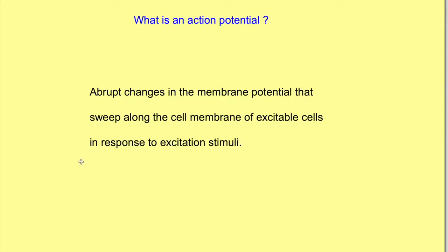Let's see what is an action potential and what are the phases of action potential. Action potential is defined as abrupt changes in the membrane potential that sweep along the cell membrane of excitable cells in response to excitation stimuli.